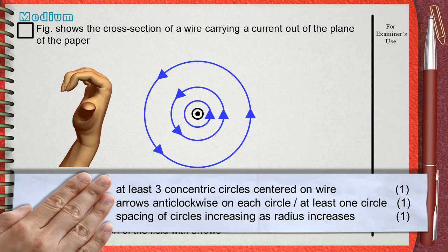The third mark is for spacing of circles increasing as radius increases. This shows how the magnetic field gets weaker as we go away from the wire.